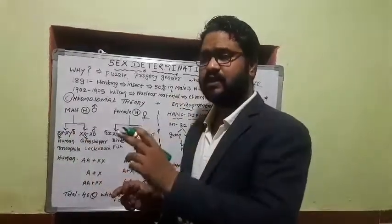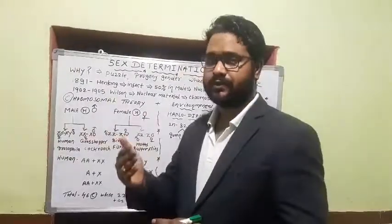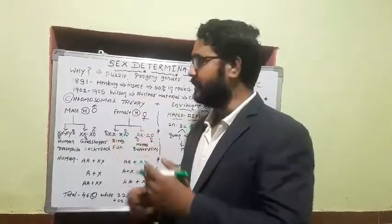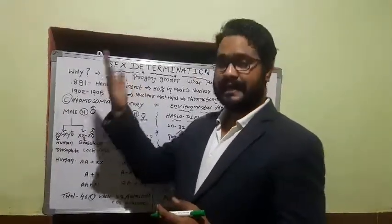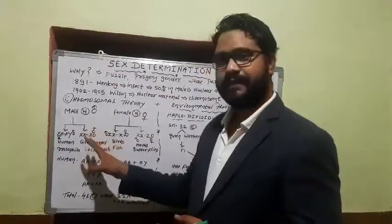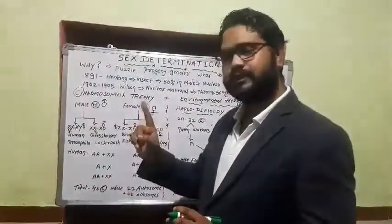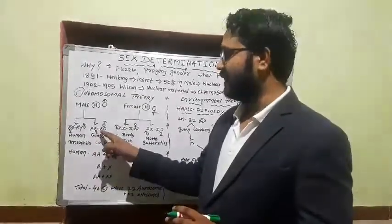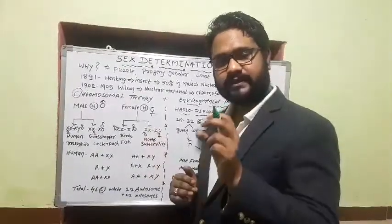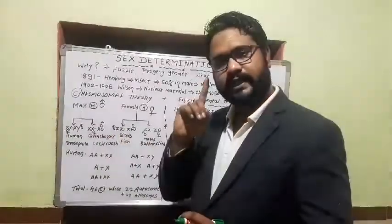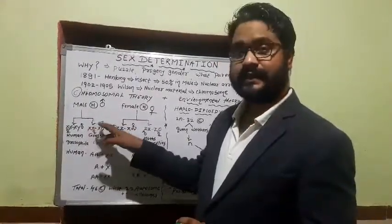In the XX-XY system of sex determination, which includes human beings, females carry two X chromosomes and males carry one X and one Y chromosome. Here, males are heterogametic and females are homogametic. Another case in male heterogamy is the XX-XO system — females have both XX chromosomes but males have only one X chromosome with no Y. That's why this is called the XO system.